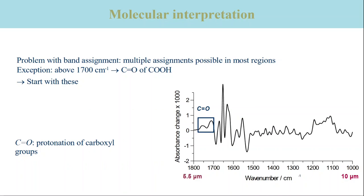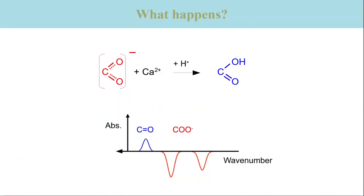Calcium release from the calcium ATPase is accompanied by the protonation of carboxylate groups of aspartate and/or glutamate residues. Four of these residues are found in the calcium binding sites, but it is also known that not all of them get protonated.